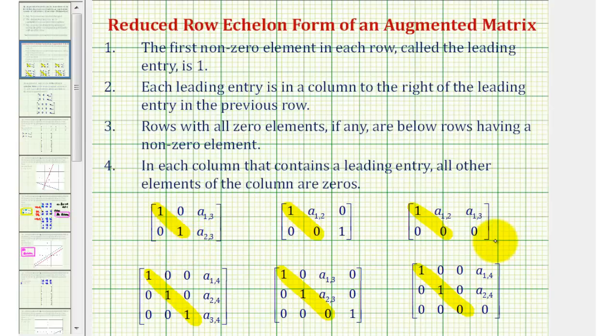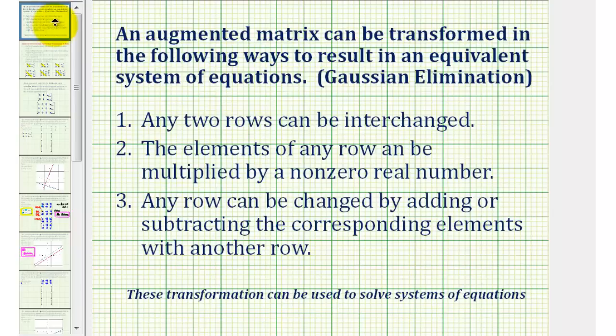The way we transform the matrix is by a process called Gaussian elimination, which means any two rows can be interchanged, the elements of any row can be multiplied by a non-zero real number, and number three, any row can be changed by adding or subtracting the corresponding elements with another row.